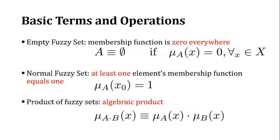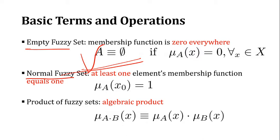A few more terms: one is the empty fuzzy set, where each element in the fuzzy set contains the value zero. A normal fuzzy set is one where at least one element contains exactly the value one — in that case, the membership function touches the 1-bar. We can also apply some algebraic operations on any kind of fuzzy sets.